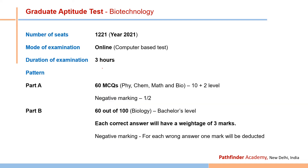GAT-B offers the maximum number of seats for MSc Biotechnology admission — 1,221 seats in 2021, though this number is not fixed. The exam is computer-based, three hours in duration. Part A has 60 MCQs from Physics, Chemistry, Mathematics, and Biology at the 10+2 level, with half-mark negative marking. Part B has 100 biology questions at bachelor level, of which you answer 60; each correct answer gives 3 marks and each wrong answer deducts 1 mark.